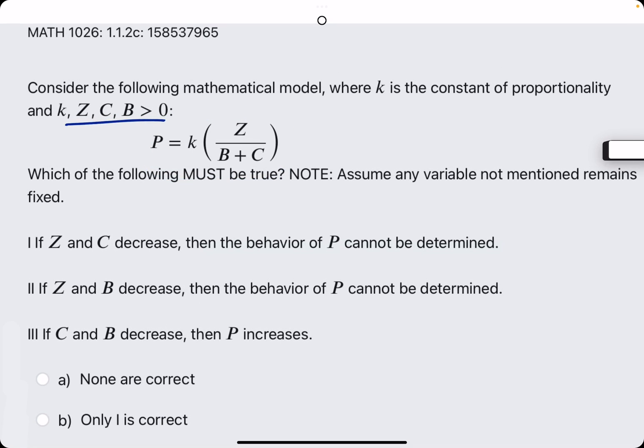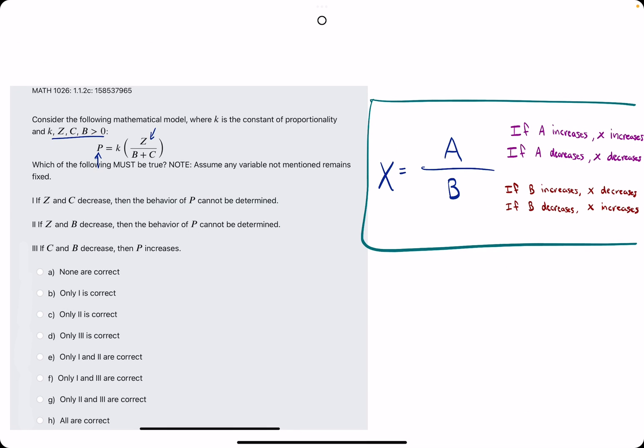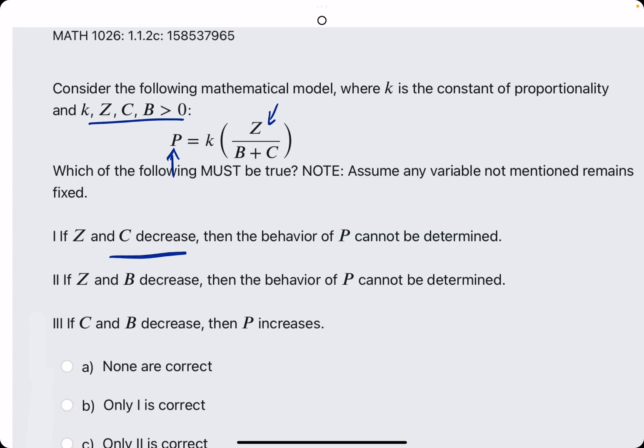Well, if Z decreases, that's a good sign that P will also decrease, since Z is in the numerator. However, if C also decreases, C is in the denominator, which means that P would actually increase if C decreases. So P has a direct relationship to Z, but an inversely proportional relationship to C.